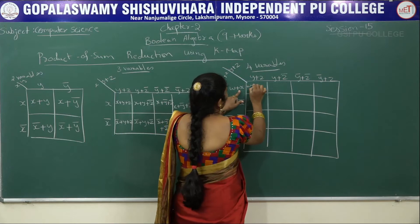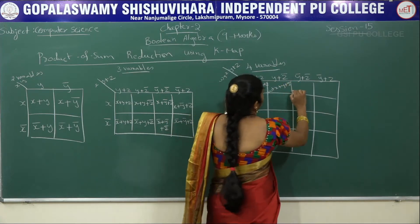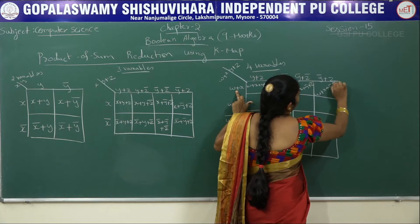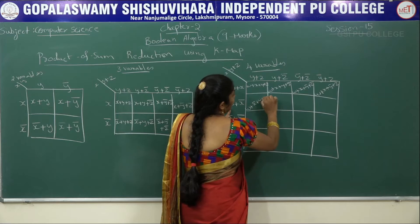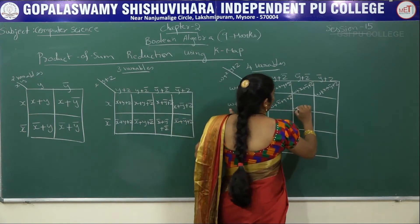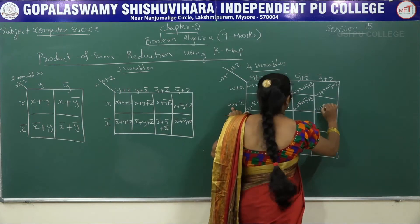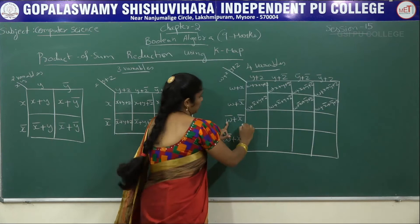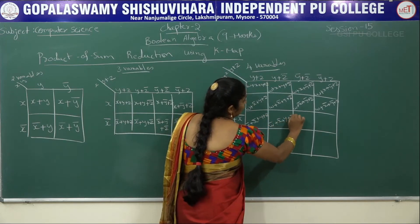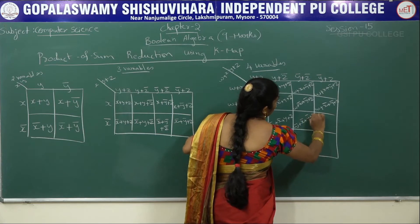For 4 variables (W, X, Y, Z), the cells represent expressions such as: W plus X plus Y plus Z, W plus X plus Y plus Z bar, W plus X plus Y bar plus Z bar, W plus X bar plus Y plus Z, W plus X bar plus Y plus Z bar, W plus X bar plus Y bar plus Z bar, W plus X bar plus Y bar plus Z, W bar plus X bar plus Y plus Z, W bar plus X bar plus Y plus Z bar, and W bar plus X bar plus Y bar plus Z bar.